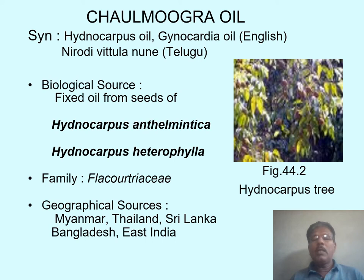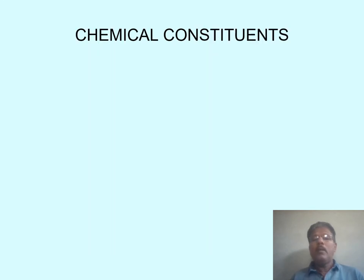Geographically, this drug is found in Myanmar, Thailand, Sri Lanka, Bangladesh, and East India. It is also found in Assam and Tripura. This oil is a pale yellow colored oil with no characteristic odor, bland in taste, and slightly soluble in alcohol. This oil is solid at 25 degrees centigrade.